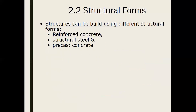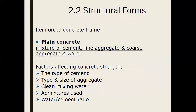Structures can be built using different structural forms: reinforced concrete, structural steel, and precast concrete. Plain concrete is a mixture of cement, fine aggregates, coarse aggregates, and water — always remember that.